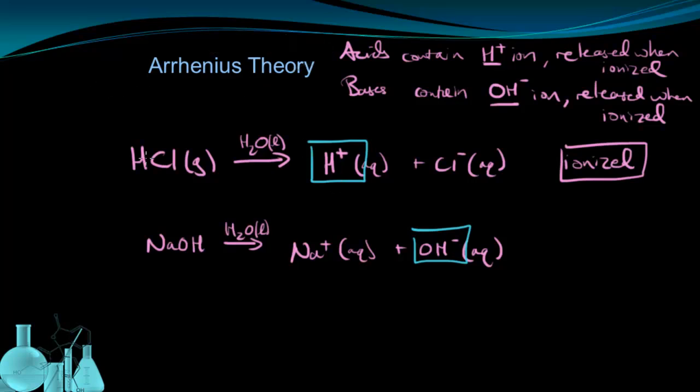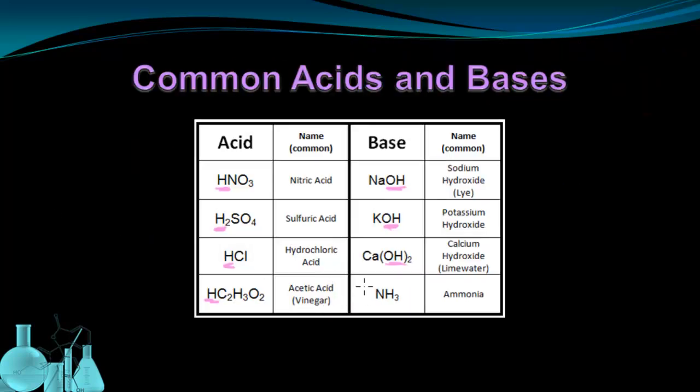Now the Arrhenius definitions are good in that they're the simplest and easiest to use, but they don't explain everything. For example, Arrhenius can't explain why ammonia is a base because it has no hydroxide ion, but ammonia is definitely a base. So to understand why something like ammonia is a base, in addition to these other ones, we need a more complete definition. And in the second part of this video, we're going to look at two more definitions of acids and bases that give us a more complete understanding of them.